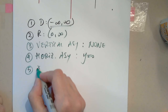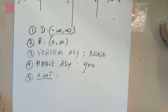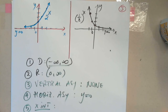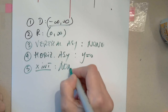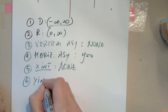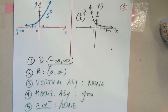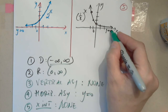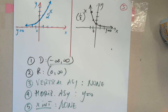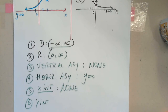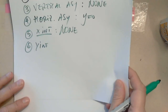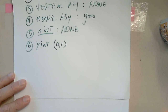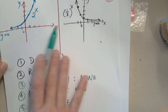Number five: x-intercept? No, of course not. Number six: y-intercept? Yes — for the pure exponential function with no transformations, the y-intercept is always (0, 1). We are talking about pure exponential with no transformations.